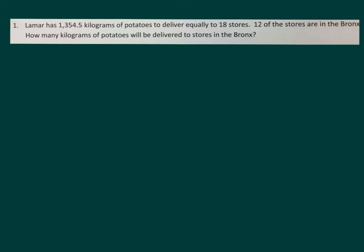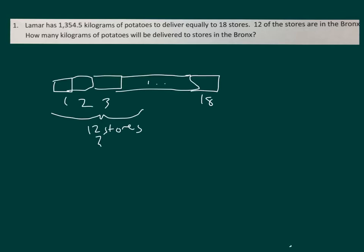Right, more than half, because there are more than half of the stores that are in the Bronx. There's 12 stores. Let's draw a tape diagram. Here's our tape diagram, and there we are thinking about what it means to have 12 stores.